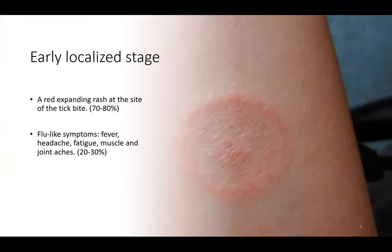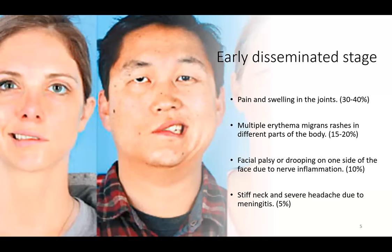Upon infection, Borrelia can cause Lyme disease and lead to a range of symptoms. Typically, early symptoms occur within days to weeks after a tick bite. They may include a red expanding rash at the site of the tick bite with a characteristic bull's eye pattern, but not all people with Lyme disease will develop this rash. Other symptoms can include flu-like symptoms such as fever, headache, fatigue, and muscle and joint pain. If left untreated, the infection can spread to other parts of the body such as the heart, nervous system, and joints. Symptoms may include multiple rashes, a stiff neck, severe headache due to meningitis, and facial paralysis or drooping on one side of the face due to nerve inflammation.